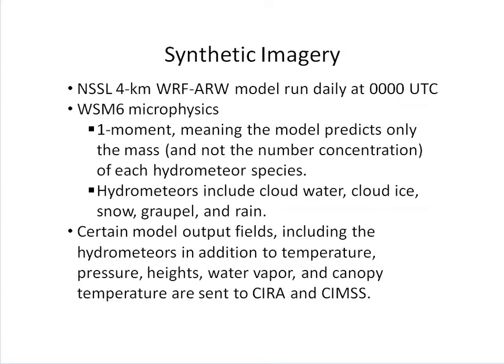The primary focus of this training session is synthetic imagery generated from the NSSL 4-kilometer WRF ARW model. The model is run once a day at 0Z and uses WSM-6 microphysics. This is a one-moment package, meaning the model predicts only the mass and not the number concentration of each hydrometeor species. Hydrometeors include cloud water, cloud ice, snow, graupel, and rain. Certain model output fields, including these hydrometeors in addition to temperature, pressure, heights, water vapor, and canopy temperature, are sent to CIRA and SIMS.